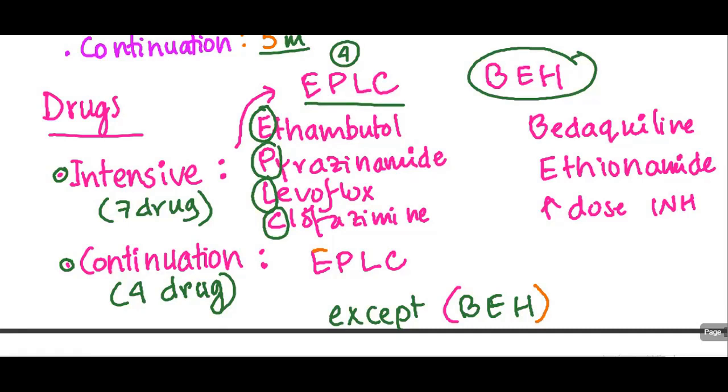And the BEH includes bedaquiline, ethionamide, and high-dose INH. Although there is INH resistance, we are still using it, but at a higher dose. And the continuation phase is the same, EPLC. We have to exclude BEH.